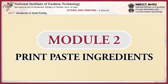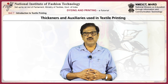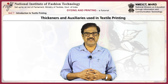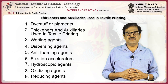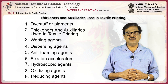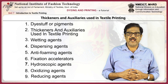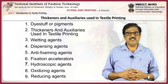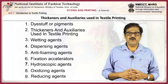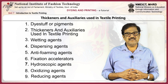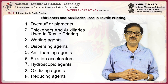This module examines the ingredients of print paste. Let us now look at the thickeners and auxiliaries used in textile printing. In particular, we will look at dye stuff or pigments, thickeners and auxiliaries, which include wetting agents, dispersing agents, anti-foaming agents, fixation accelerators, hygroscopic agents, oxidizing agents and reducing agents.